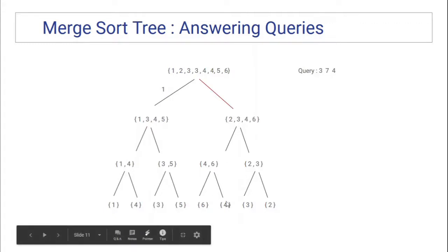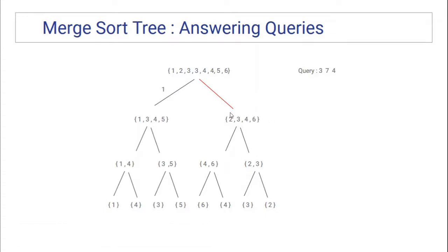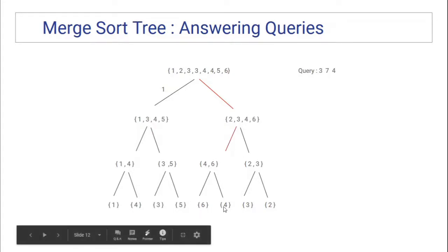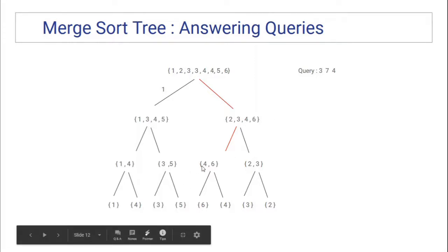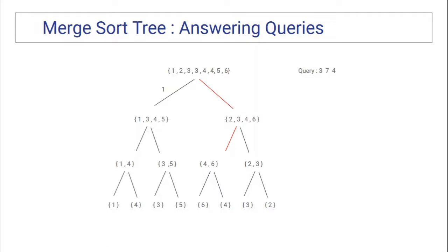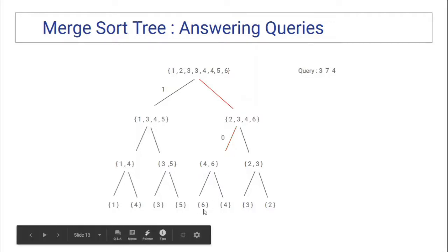Now the left call is completed, so we go right. The range 5 to 8 has partial overlap with our query range 3 to 7, so we make two recursive calls. We go left; this represents 5 to 6, which lies completely inside the query range, so we apply binary search. We find the first appearance of any element that is 4 or greater than 4, which is at index 0. That means there are 0 elements strictly smaller than 4, so we return 0 — the elements are 6 and 4.